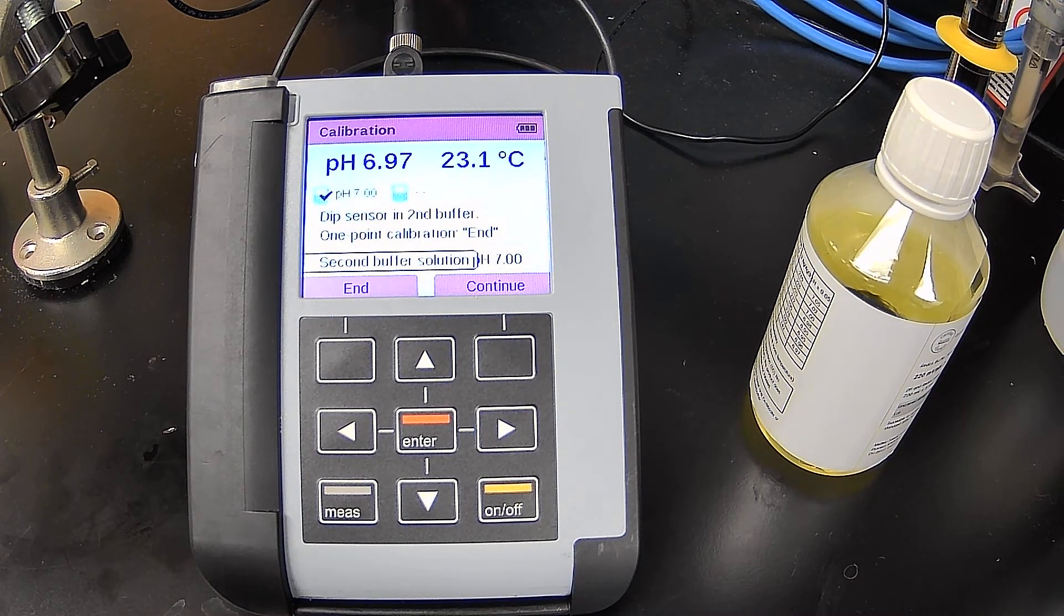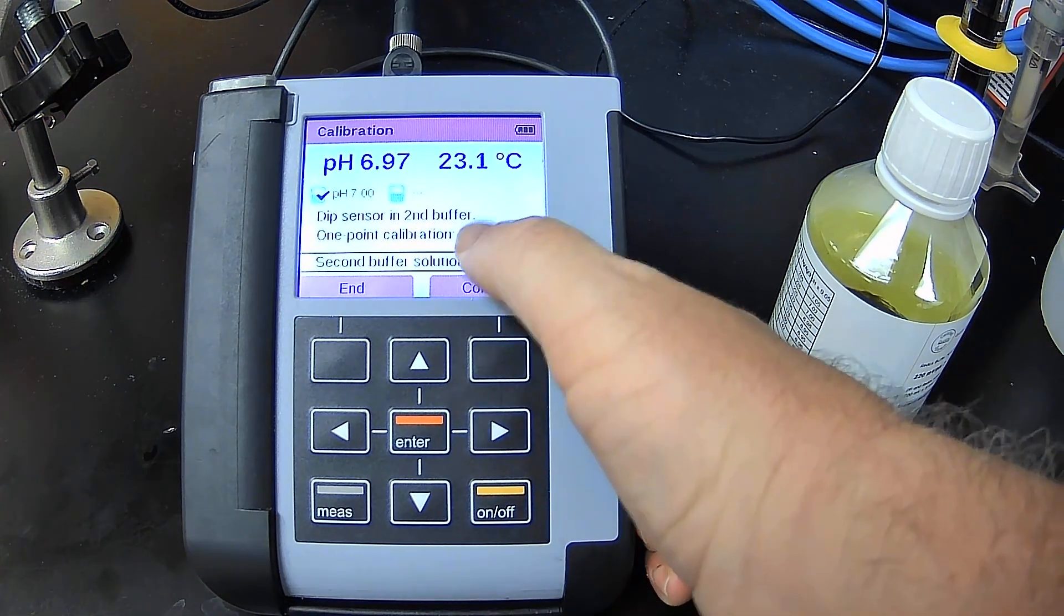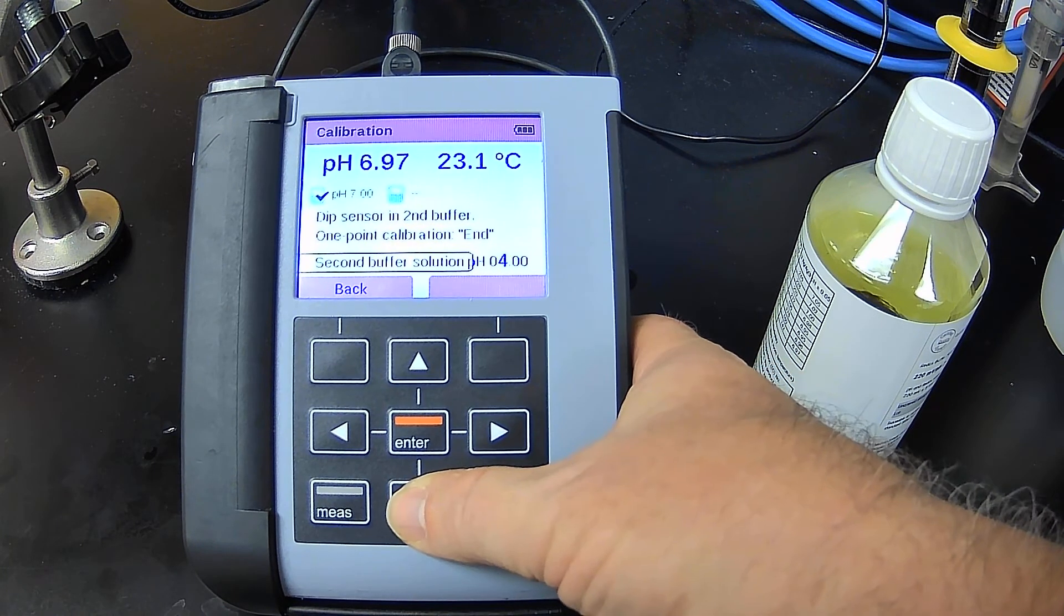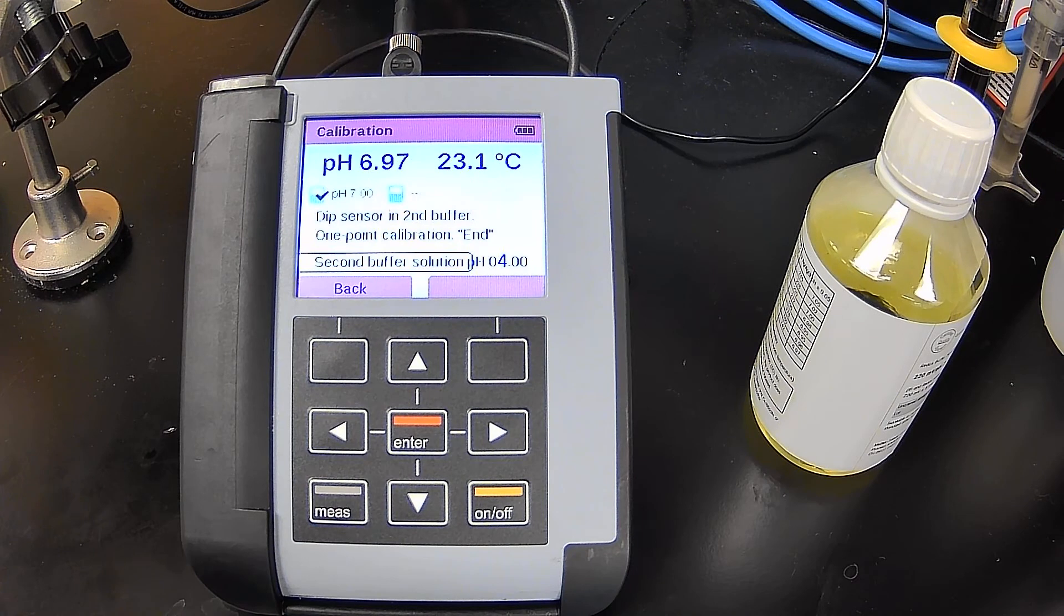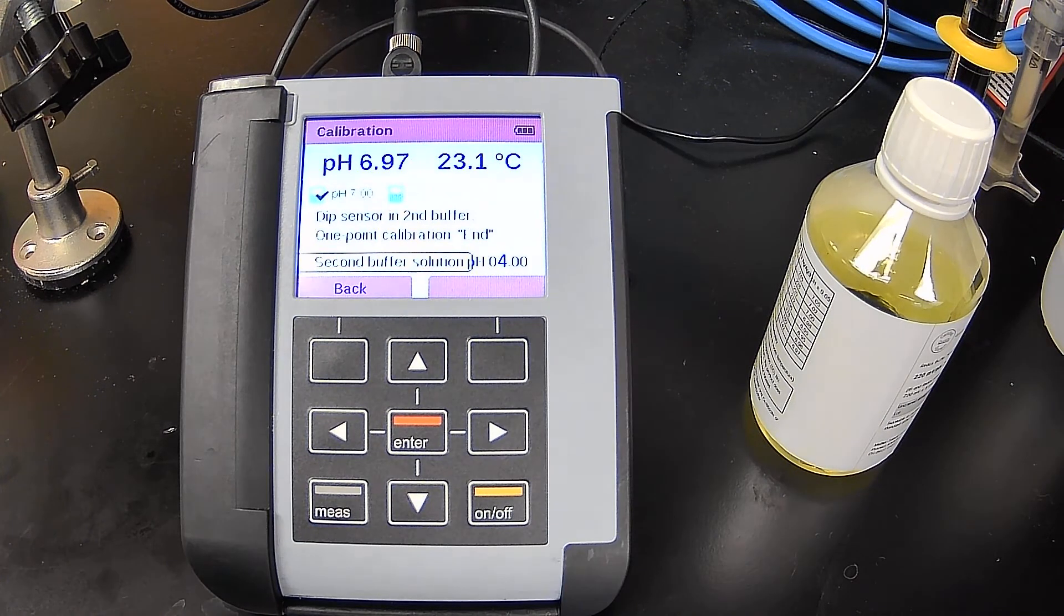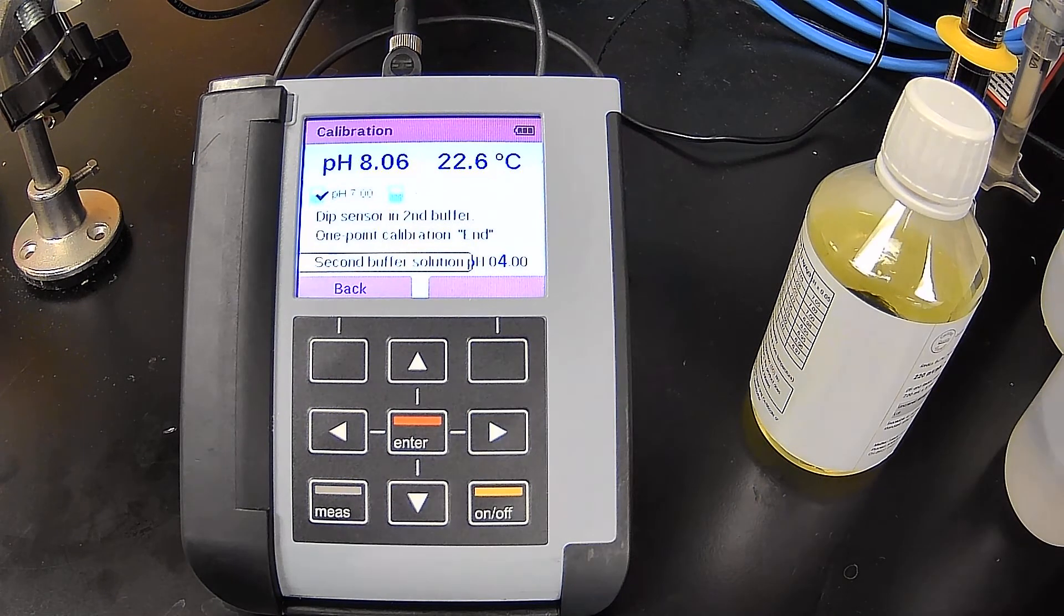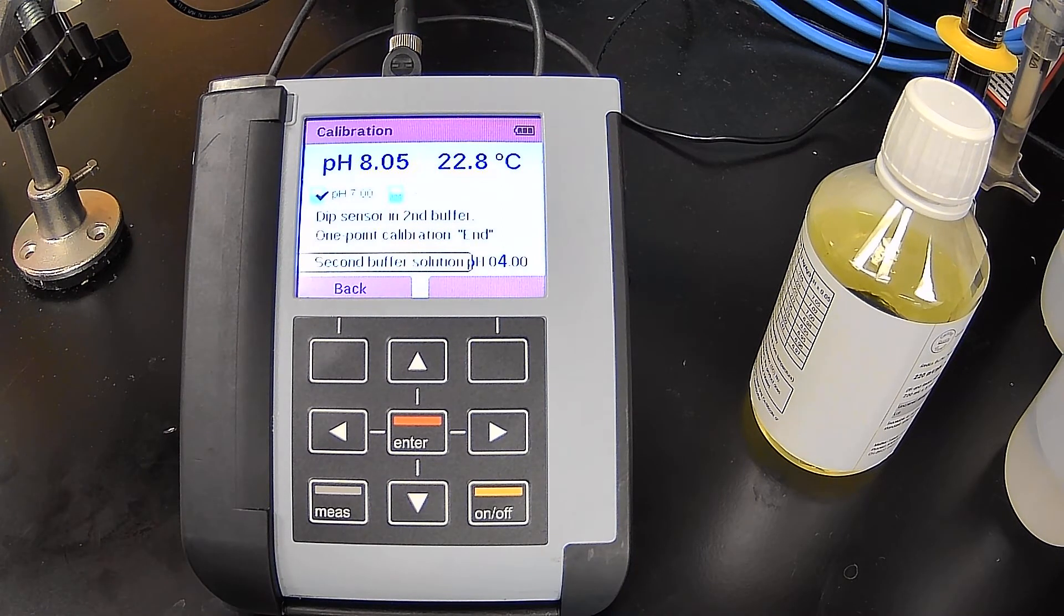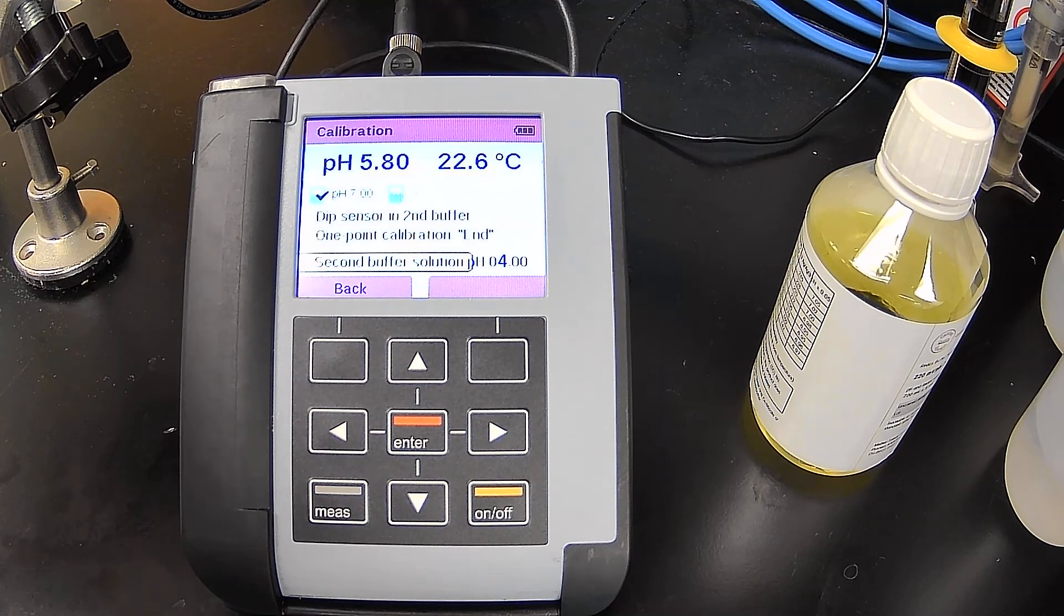Okay. So it's telling me go ahead and dip sensor in the second buffer. So here, I'm going to go ahead and enter a buffer 4 and I'm going to remove this from the buffer 7. I'm going to wash it. So what you can't see is I'm using some DI water to wash off the electrode. I'm going to remove my buffer 7. I'm going to go ahead and dip the electrode into a buffer 4.